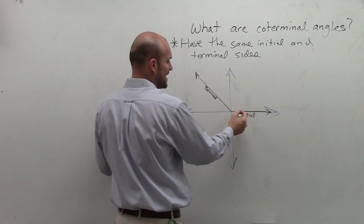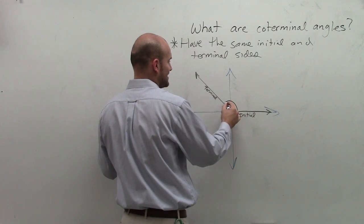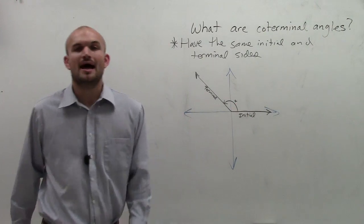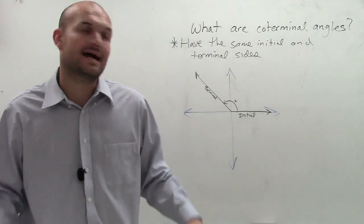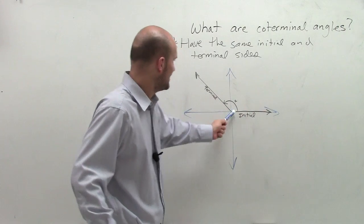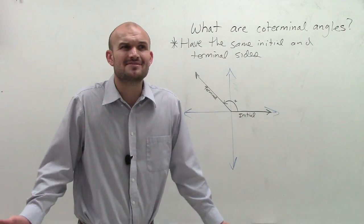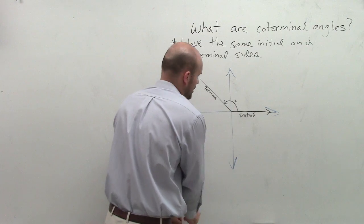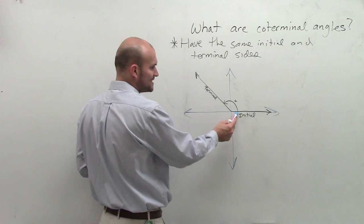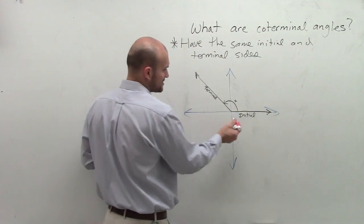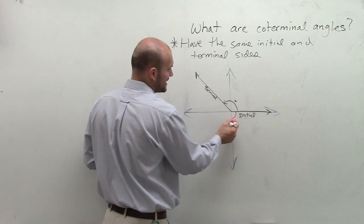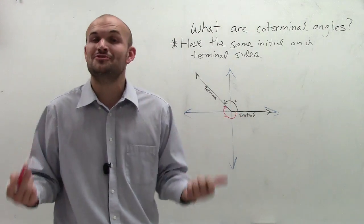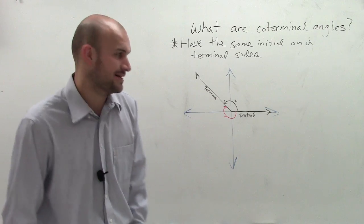My angle is going to start here and end there in the positive direction. But is that the only way I can draw an angle between here and here? The answer is obviously no. I can go in the other direction — my initial side and terminal side stay the same, but I go in the negative direction. And you can do that — that's perfectly fine.